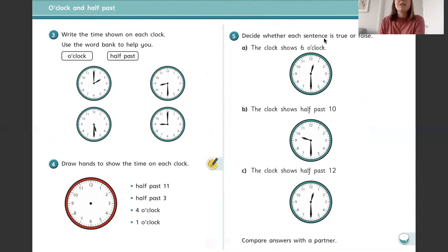Decide whether each sentence is true or false. The clock shows six o'clock. So if you think it shows six o'clock, you can write true. Or if you don't think it shows six o'clock, you'd be right - it's false. Have a think about which hands are pointing where. Remember that the short hand is the hour hand, it tells you the hour, and the long hand tells you the minute. So there's something wrong with this one. It doesn't show six o'clock. So you can write your answer either on your piece of paper or you can write your answer here.